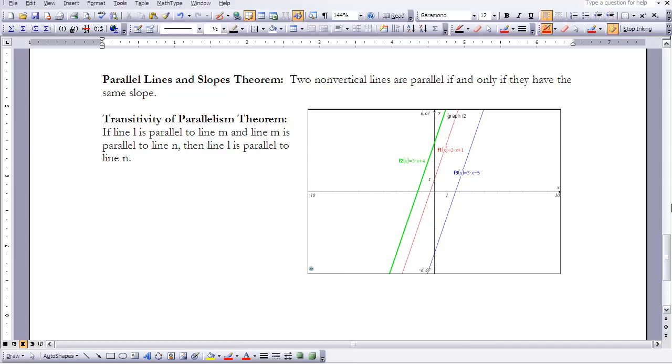We also have the transitivity of parallelism theorem. And I talked about the transitive property as it pertained to equality, but now we're going to talk about it as it pertains to parallel lines. If you look here, I have three graphs, or I'm sorry, three lines. And all three lines appear to be parallel. But if we look at our slopes theorem, parallel lines and slopes theorem, if they have the same slopes, then they're parallel. So these all have the same slopes, so they would be parallel. But the theorem says if L is parallel to M, and M is parallel to N, then L has to be parallel to N. So that's how the transitivity of parallelism theorem works.